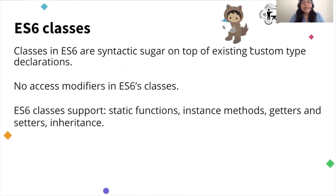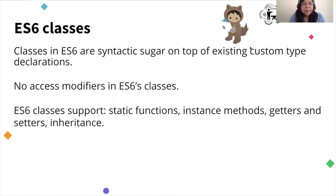The next feature will be classes. This is one of the features that helped me understand JavaScript a little bit more, mainly because whenever you see a JavaScript class, it's similar to what we have in Apex. The only thing is that classes in ES6 are basically syntactic sugar. One difference is that in ES6, they don't have access modifiers — we know that in Apex we have global, private, and many others. Something that is similar is that in ES6, they support static functions, instance methods, getters, setters, and inheritance.